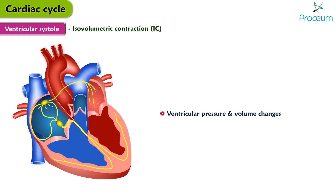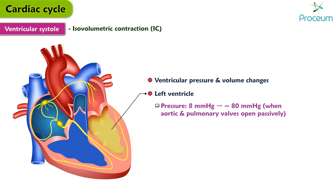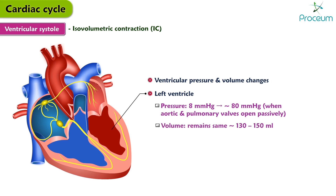Ventricular pressure and volume changes during this phase: the left ventricular pressure increases from about 8 mmHg to roughly 80 mmHg — about 10 times — when the aortic and pulmonary valves open passively. The left ventricular volume remains the same, at about 130 to 150 mL, which can differ in every individual. This is the period of highest oxygen consumption.